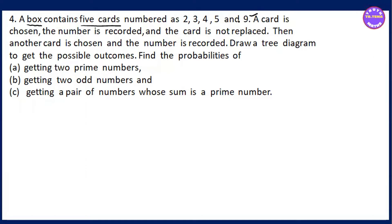The numbers are 2, 3, 4, 5, and 9. Again, 2, 3, 4, 5, and 9. The number is recorded. This box contains 5 numbers: 2, 3, 4, 5, and 9. The cut is not replaced.